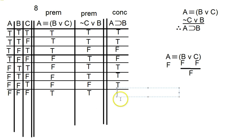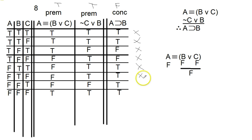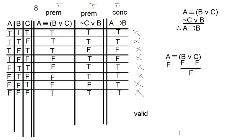We forgot one case — that's going to be true. Now we're looking for a counterexample: is there ever a case where all the premises are true and the conclusion is false? Looking through: here we have true premises but not a false conclusion; here there's a false premise; same there. No counterexamples anywhere. When there are no counterexamples, the argument is valid. Solved.